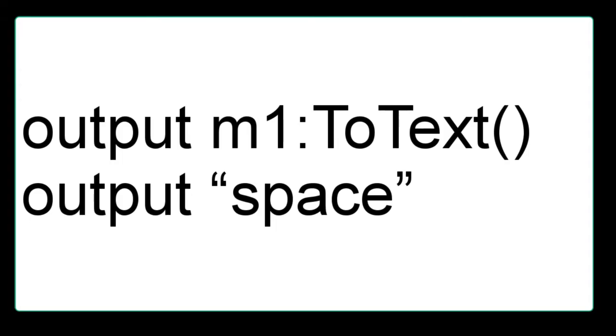Output the matrix and put a space after it. For the purposes of these videos, we will always use space for that additional output line — it allows us to put a gap between consecutive matrices that we print. Type: lowercase output, space, lowercase m, one, colon, capital T, lowercase o, capital T, lowercase e-x-t, open parentheses, close parentheses, side by side. Then type: lowercase output, quotation mark, lowercase space, and quotation mark.